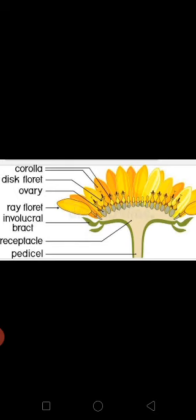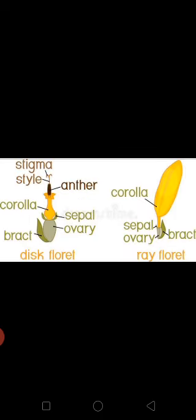The flowers in the center of the head inflorescence are called disc florets. In Surya Gandhi and Zinnia inflorescences, the peripheral and outer region is distinct from the central region. We refer to the flowers in the central region as disc florets.